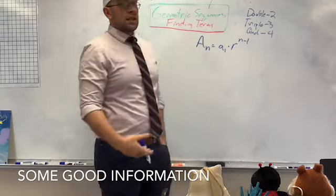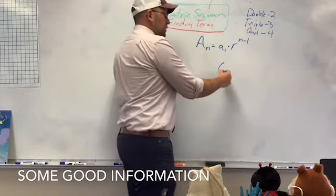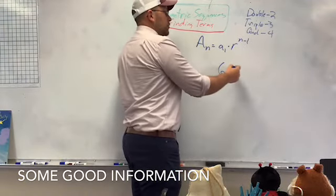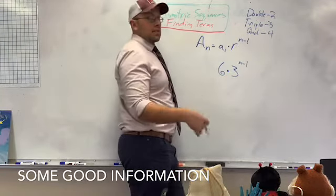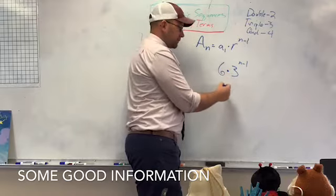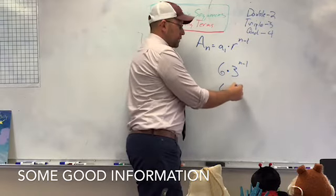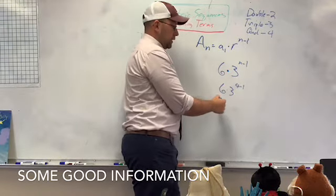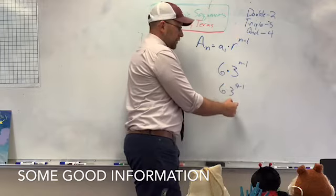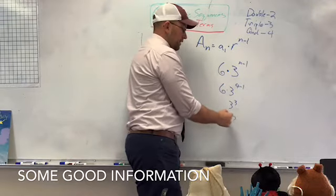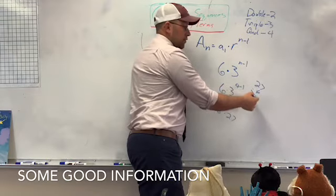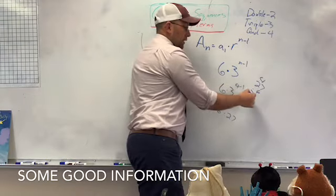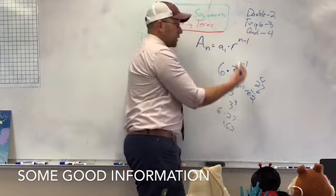So if I say I have 6 donuts which I start with, and I say I triple those each day, how many am I going to have after 4 days? So 6 times 3, 4 minus 1, so that gives me 3 to the 3rd, which is 27 times 6. 27 times 6 is 162. I have 162 donuts after 4 days.